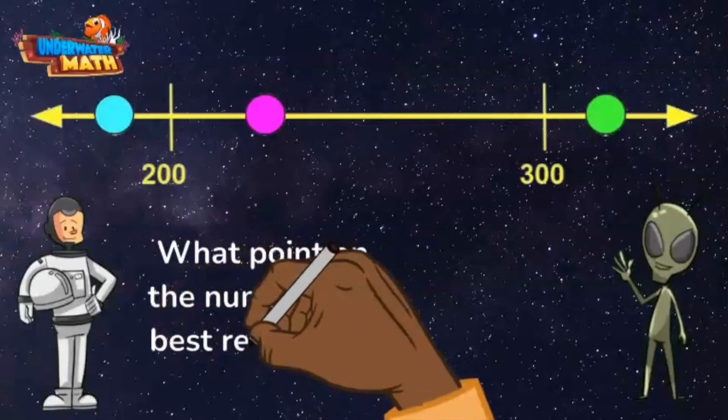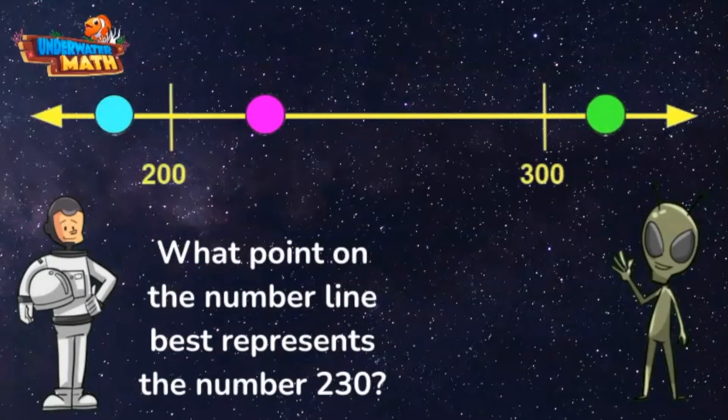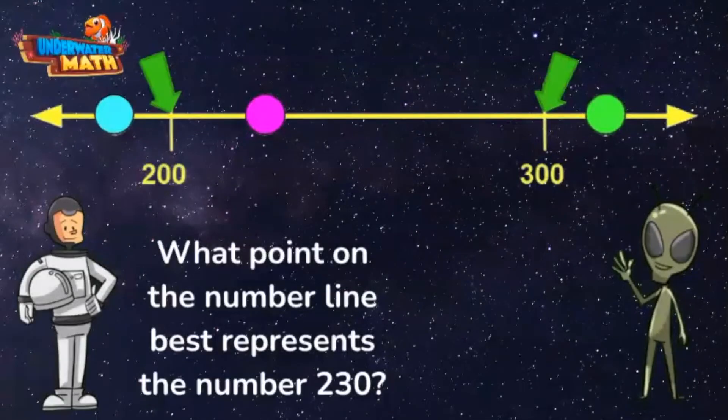Let's think about that number in relation to the numbers the line gives us. I know that 230 is more than 200 and less than 300, so 230 will be between these two marks.